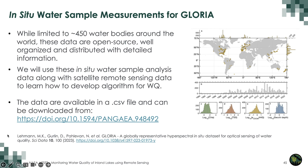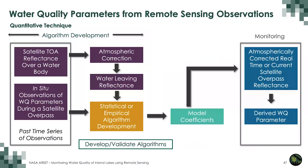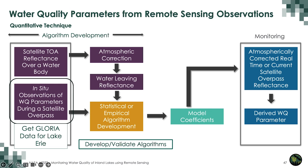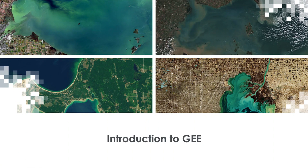Now we'll look at a case study. First we'll acquire in-situ data and then satellite data from Lake Erie — our focus area. We discussed the algorithm development flowchart earlier. Here, we'll get in-situ data from GLORIA for Lake Erie and then get Landsat 8 and Sentinel-2 reflectance data using Google Earth Engine. But before we do that, here is an introduction to Google Earth Engine.